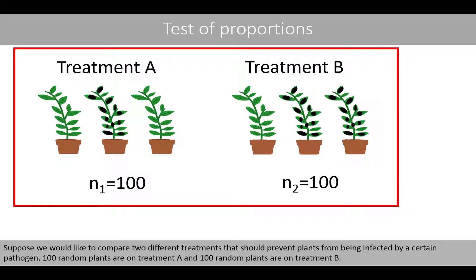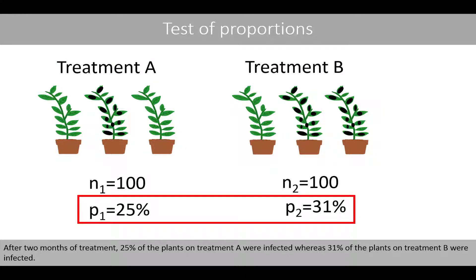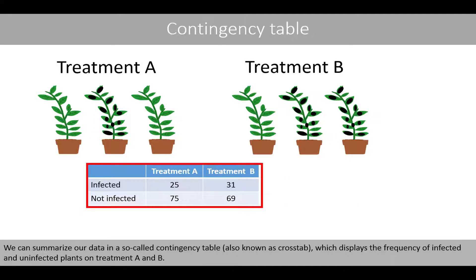Suppose we would like to compare two different treatments that should prevent plants from being affected by a certain pathogen. 100 random plants are on treatment A and 100 random plants are on treatment B. After two months of treatment, 25% of the plants on treatment A were infected, whereas 31% of the plants on treatment B were infected. We can summarize our data in the so-called Contingency Table, also known as cross-tab, which displays the frequency of infected and uninfected plants on treatment A and B.